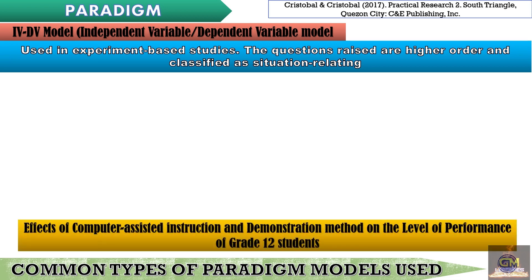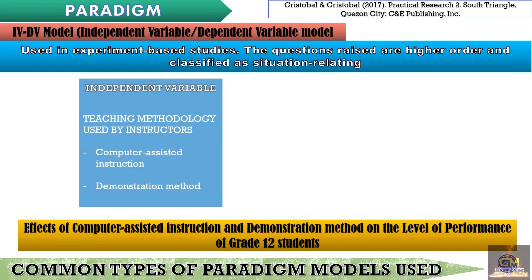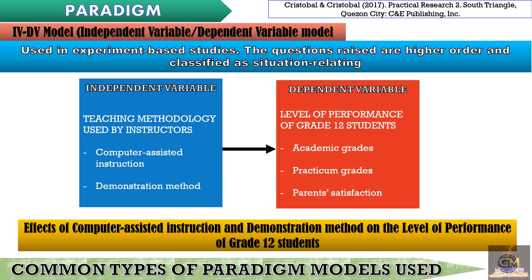In this example, we have the effects of computer-assisted instruction and demonstration method on the level of performance of grade 12 students. For our independent variable, we have the teaching methodology used by instructors, which involves the computer-assisted instruction and the demonstration method. Our dependent variable would be the level of performance of grade 12 students, measured according to academic grades, practicum grades, and parent satisfaction. This model is used because the independent variable — the teaching methodology — would greatly affect the dependent variable, which is the level of performance of grade 12 students, depending on what kind of methodology is used.